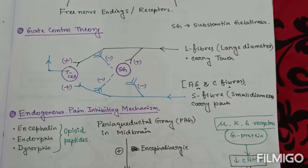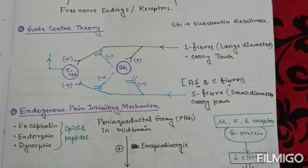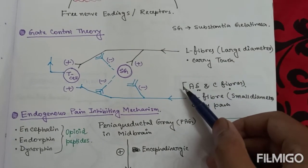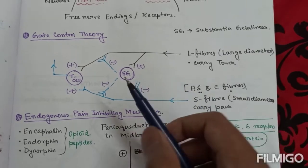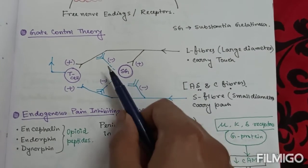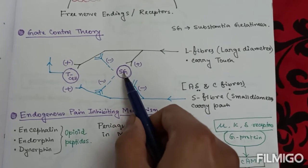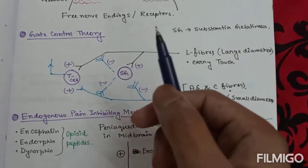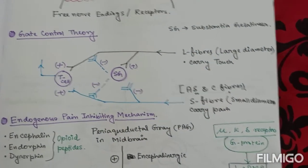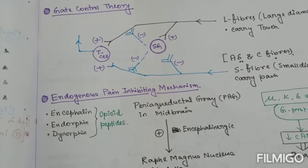On the other hand, activity in the small diameter afferents inhibits the SG neuron. So the inhibiting effect of the SG neuron is now removed. The gate is now open.